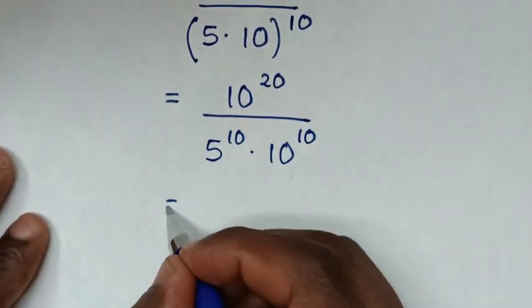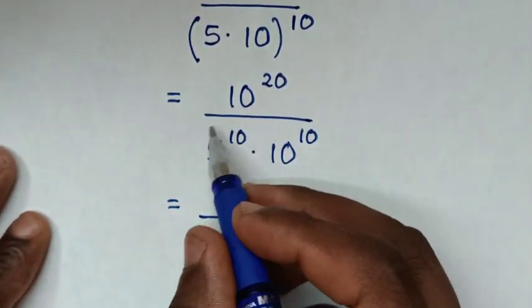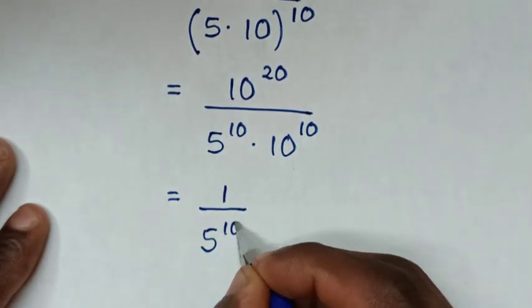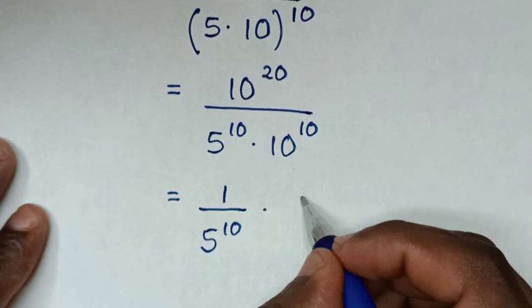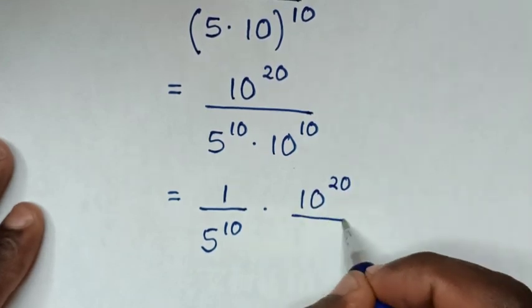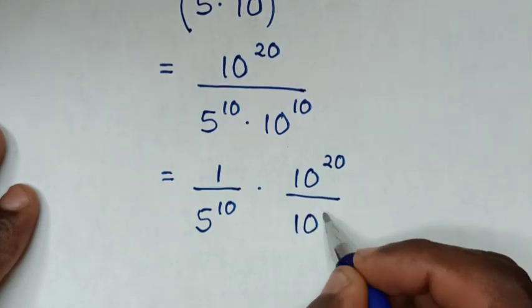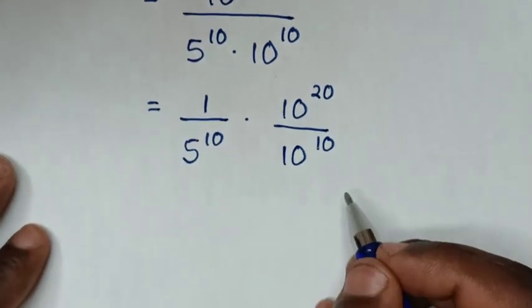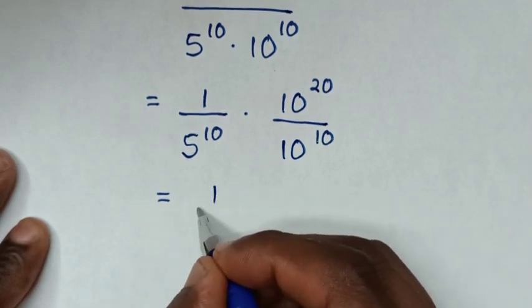It will be equal to 1 over 5 power of 10, then times 10 power of 20 over 10 power of 10.